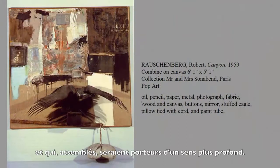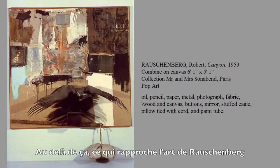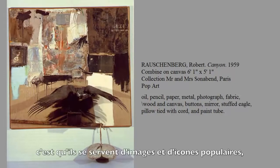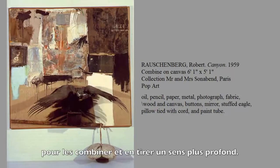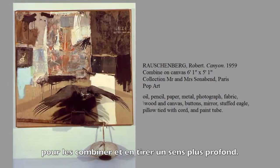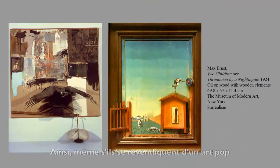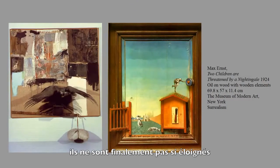What makes Rauschenberg and his roommate Jasper Johns pop artists is that they're taking pop icons — popular items from the stream of culture — and recombining or reconfiguring them to make deeper meanings. Even though they call themselves pop artists, they're not very different from the surrealists we studied earlier.